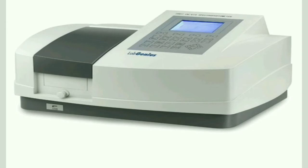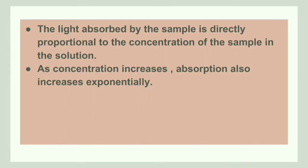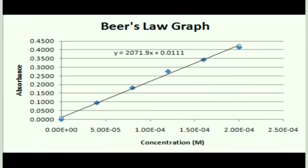This diagram shows a spectrophotometer — this is how a spectrophotometer looks like. There is a relationship between the light absorbed by the sample and the concentration of the sample in the solution. The light absorbed by the sample is directly proportional to the concentration of the sample. As the absorbed light increases, the concentration also increases. Here is a graph showing absorbance at a given concentration: as the concentration increases, the absorption also increases, giving a linear graph when plotting absorption versus concentration.